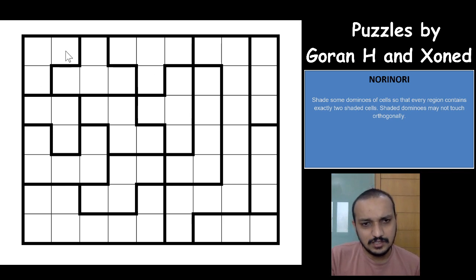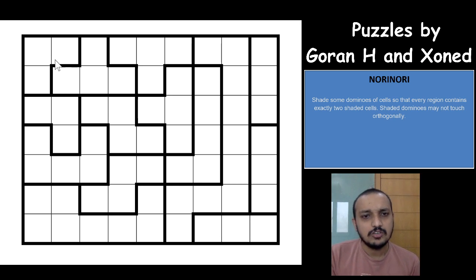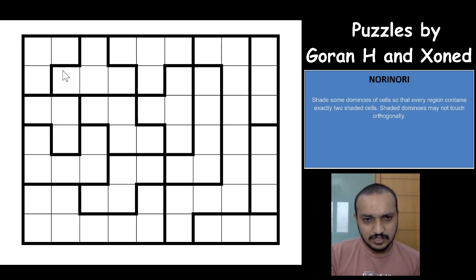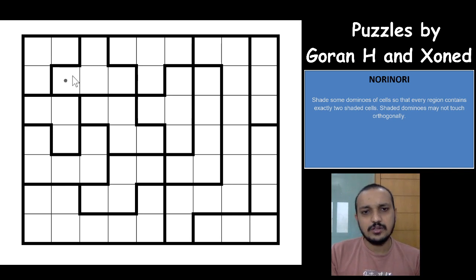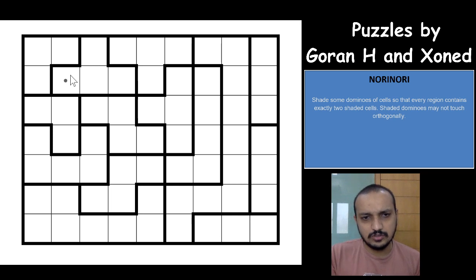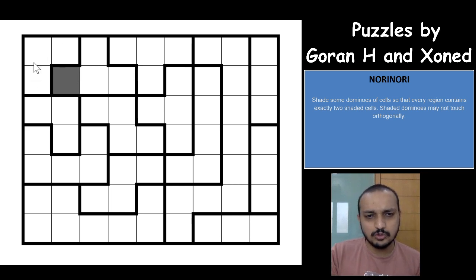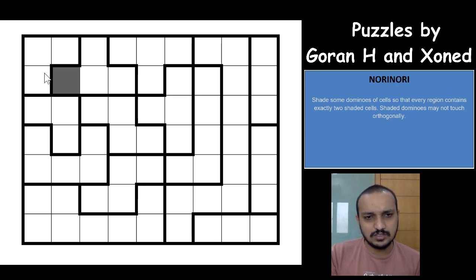One of the basic techniques here is the L-terminal. The moment you get an L-terminal, the center cell outside of the L-terminal will never be shaded. This is a basic Nori Nori technique — if we shade that cell, there is no way you will be able to shade two cells of that terminal. You would be able to shade one, or none of those cells.